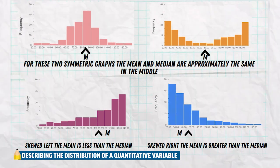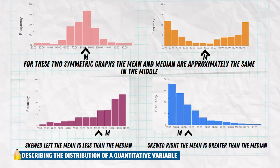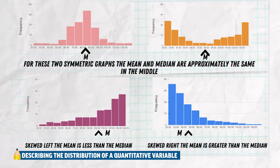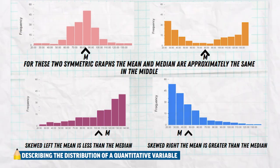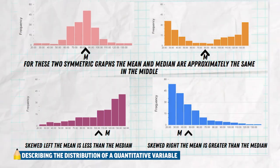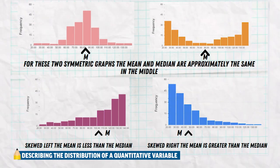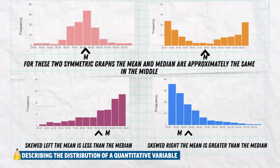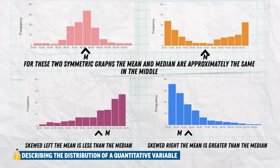When data is skewed to the left, like the purple graph, the mean (the arrow) is going to be a little bit less than the median. When your data is skewed to the right, like in blue, the mean is going to be a little bit greater than the median. The reason is that in the blue graph, the majority of data is at the lower values, but those higher values — even though there's only a couple at the far right — are heavier. They're of bigger value to the data set, and the mean has to take them into account, so they pull the mean higher.